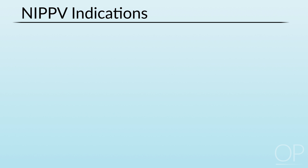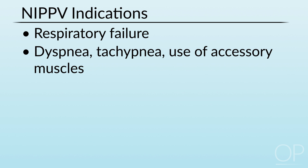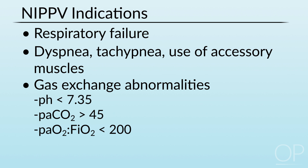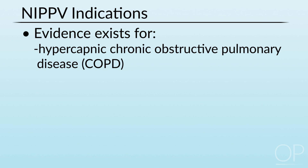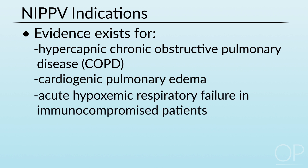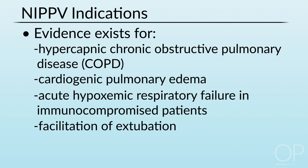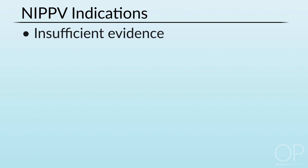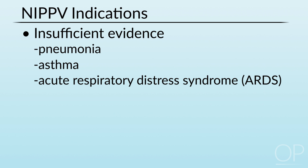Indications for using non-invasive positive pressure ventilation include respiratory failure, dyspnea, tachypnea, and use of accessory muscles. If there are gas exchange abnormalities, you may consider using NIPPV. Evidence exists for acute hypercapnic respiratory failure in COPD, cardiogenic pulmonary edema, acute hypoxemic respiratory failure in immunocompromised patients, facilitation of extubation, and for patients with obstructive sleep apnea. Insufficient evidence exists for pneumonia, asthma, and ARDS.